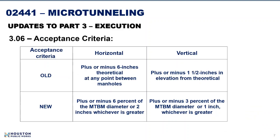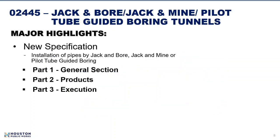The acceptance criteria is very important for gravity sewer systems. The existing acceptance criteria was plus or minus 6 inches horizontally at any point between manholes. This was changed to plus or minus 6% of the micro-tunneling boring machine diameter, or 2 inches, whichever is greater. For the vertical acceptance criteria, the existing spec had plus or minus 1.5 inches. This was modified to plus or minus 3% of the micro-tunneling boring machine diameter, or 1 inch, whichever is greater.